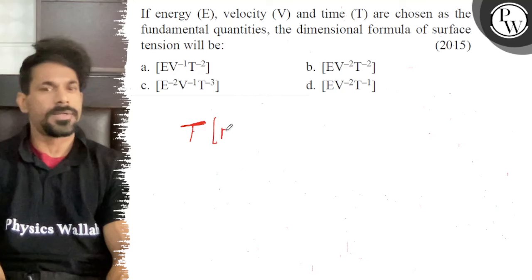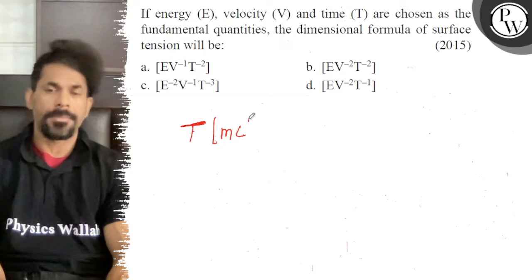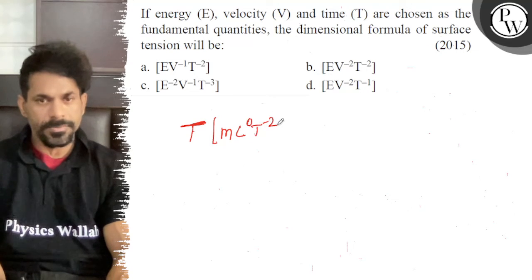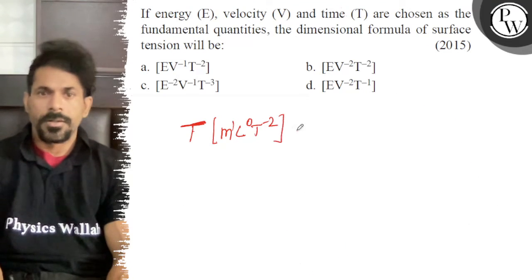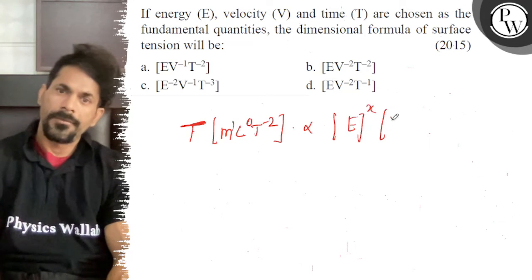This dimension is called force per unit length, i.e. ML^1 force per unit length, ML^0T^-2. And that is proportional to what? E power of x, V power of y, and T power of z.